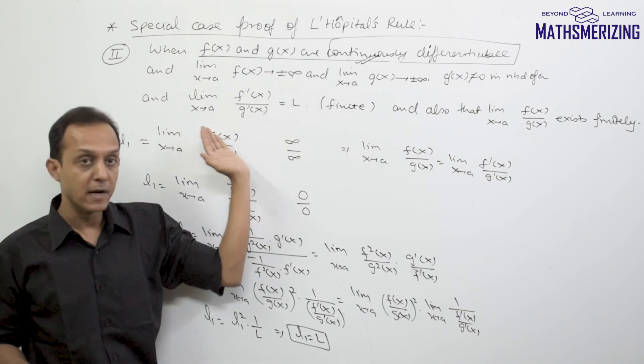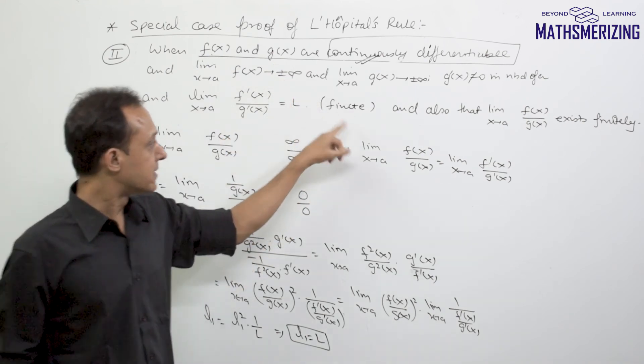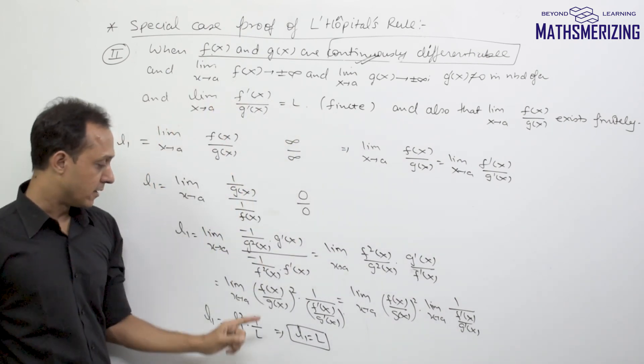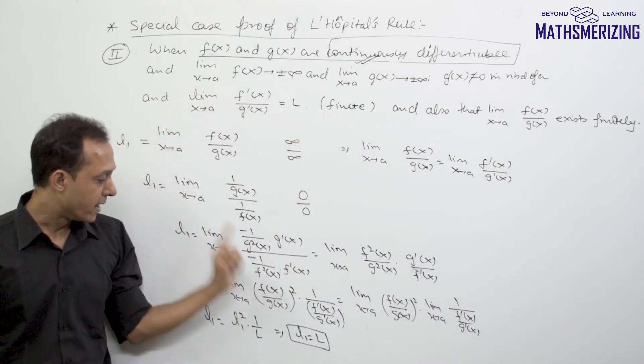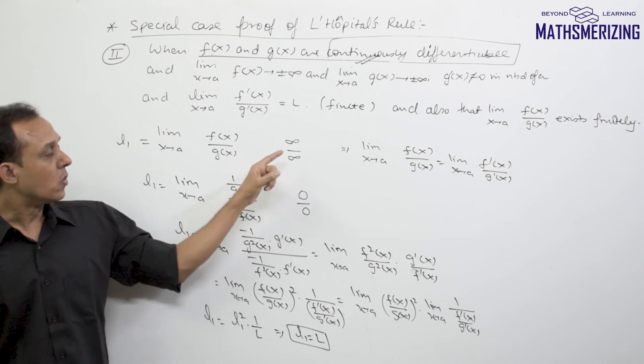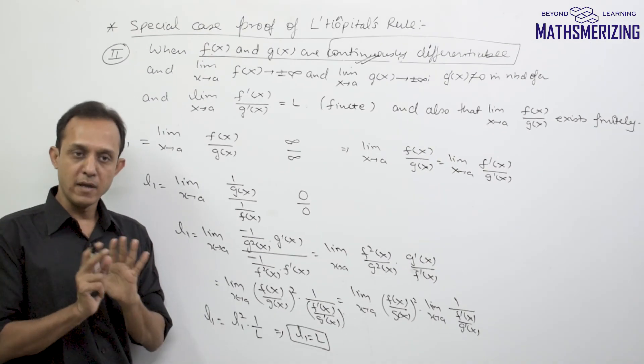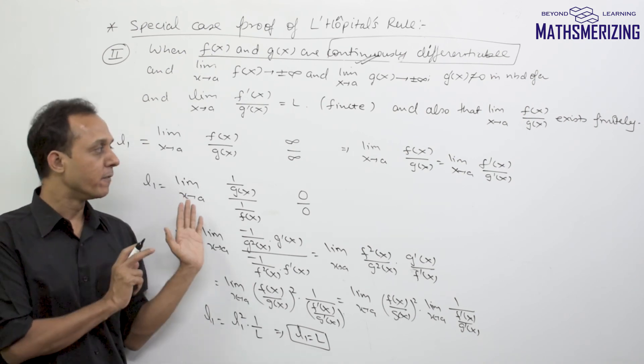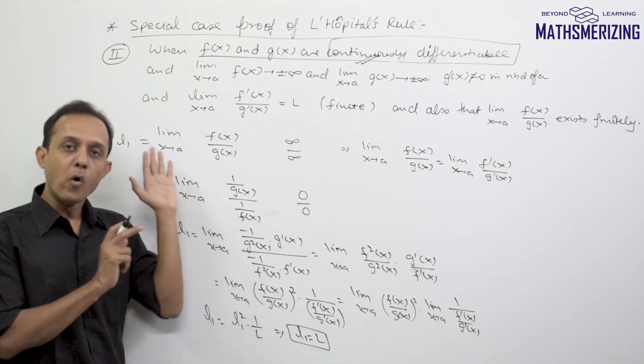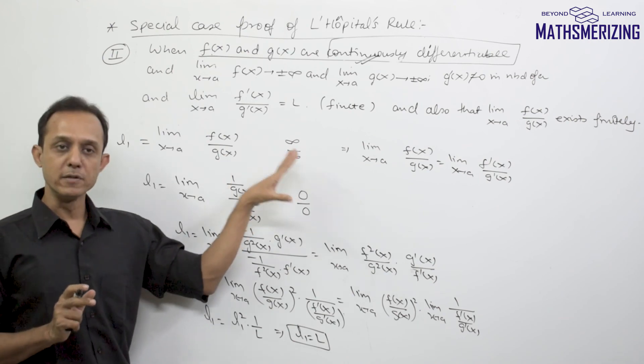And also we have made many assumptions that these limits exist and they exist finitely, and also that we can define L1 and L both separately. So with all these assumptions we have proved the second case. So this proof in no way is general proof and it doesn't claim that this proof holds for all the conditions for L'Hospital's rule.